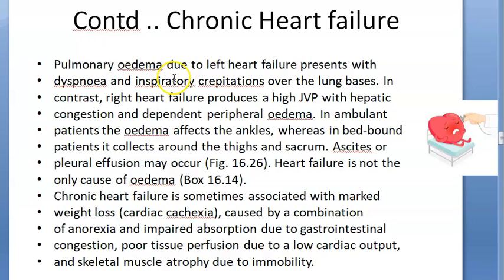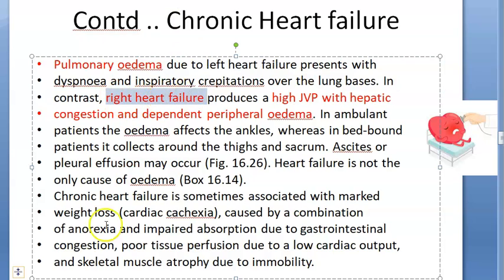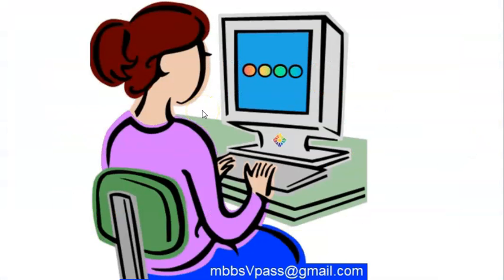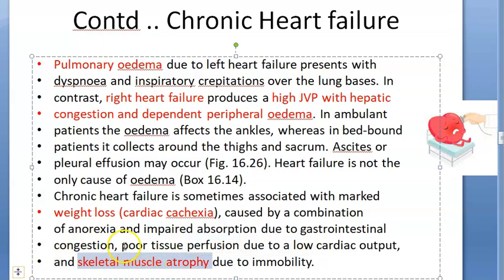In chronic heart failure, pulmonary edema can still be present. There will be high JVP with hepatic congestion, and peripheral edema because of right heart failure. Patients can also have weight loss — this is called cardiac cachexia. They have anorexia, meaning they don't have much appetite. There is also impaired absorption because the gastrointestinal tract is not getting perfused, and because of immobility they develop skeletal muscle atrophy.